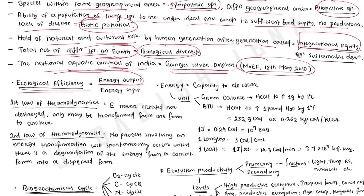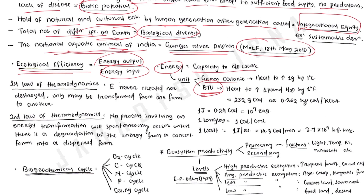Ecological efficiency is energy output divided by energy input. Energy means capacity to do work; its unit is gram calorie or British Thermal Unit (BTU). There are different laws of thermodynamics. The first law of thermodynamics states that energy is never created nor destroyed — it may only be transferred from one form to another.